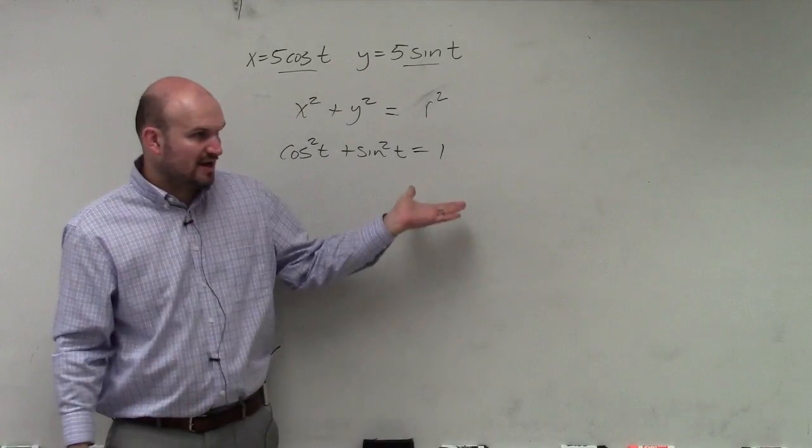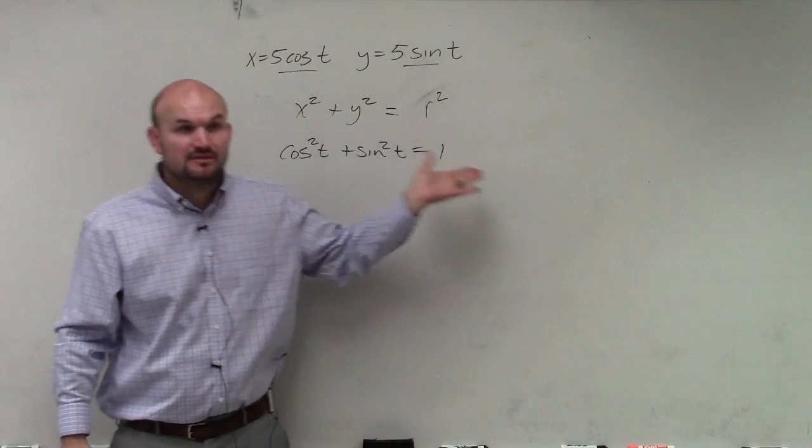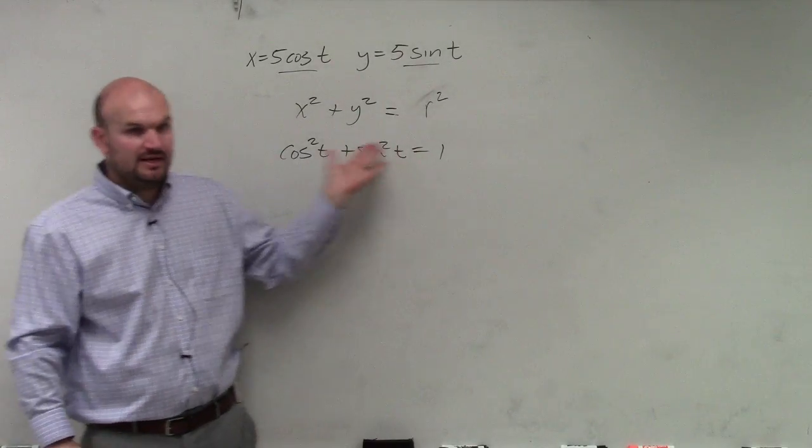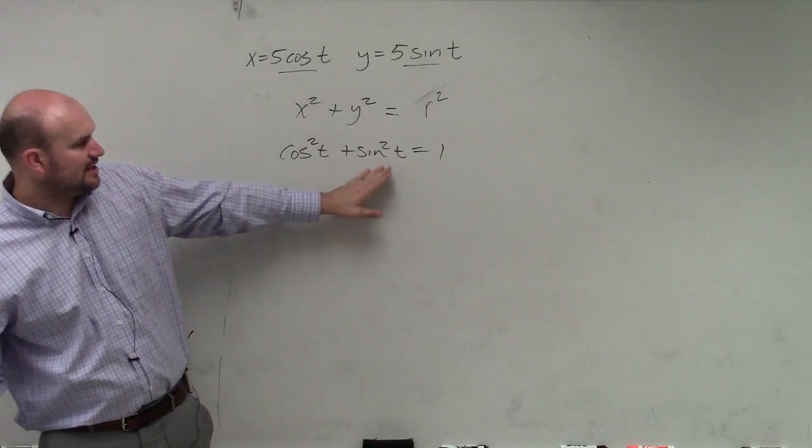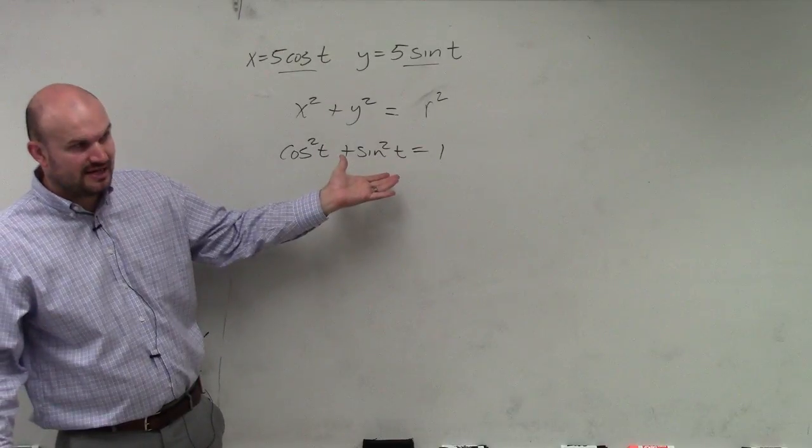Right? That's your Pythagorean identity. It's also the parametric—that's our Pythagorean identity that we can use, just using t instead of theta.